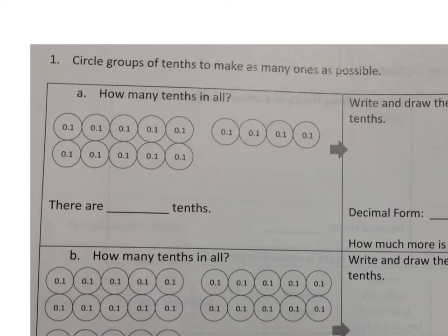How many tenths does it take to make one one? Everyone? Ten tenths. So you can see here that I have ten tenths. So I'm going to circle them because I know that that equals one, right? How many tenths are there in all? In the red circle, that's ten, and then there's one, two, three, four. How many tenths are there in all? Everyone? Okay, so when you see these kinds of problems, you will write that there, how many tenths there are in all. You just answer the question.